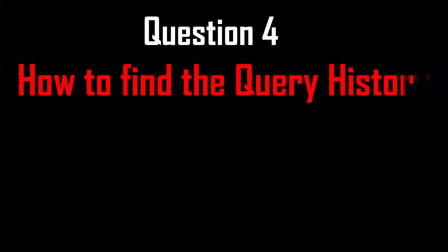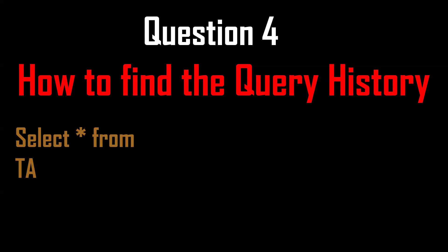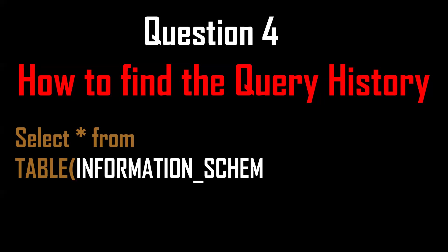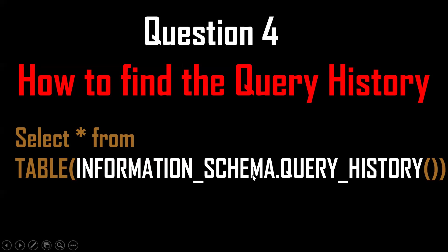The fourth question is: how to find the query history. Suppose if you want to find the query history, we have a view — SELECT * FROM information_schema.query_history. By this we can find the query history information.